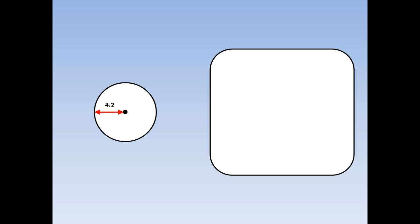We're going to find the circumference of this circle with radius 4.2. First, I'll write out the formula: circumference equals 2 pi r, which means 2 times pi times the radius. Pi is 3.14 and the radius is 4.2. So our final answer is that the circumference is 26.376 centimetres.